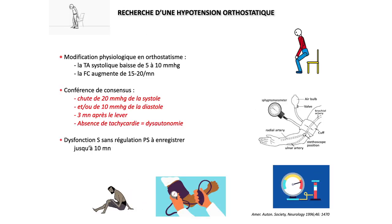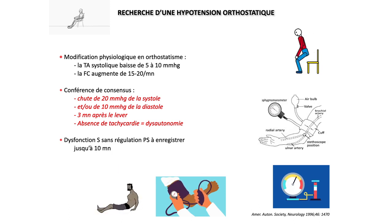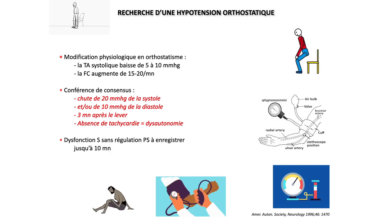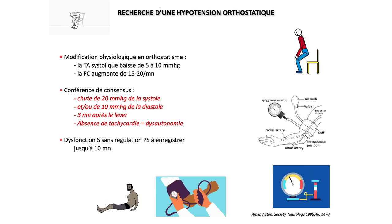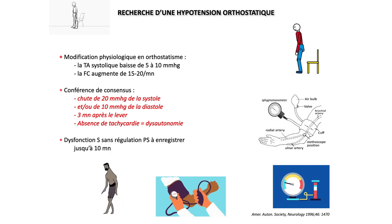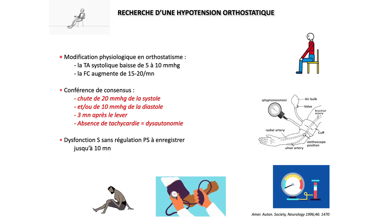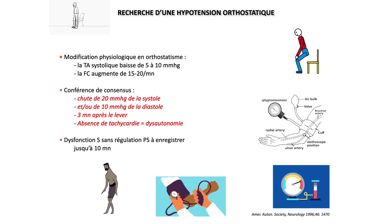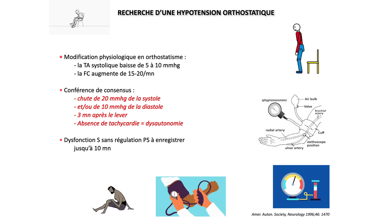La recherche de l'hypotension orthostatique : selon les recommandations de la Société américaine du système nerveux autonome (1996), la pression systolique baisse et la fréquence cardiaque augmente normalement lors du passage en orthostatisme. L'hypotension est définie par une chute de 20 mmHg de la systole et/ou 10 mmHg de la diastole, jusqu'à 3 minutes après le lever. L'absence de tachycardie compensatrice signe la dysautonomie.